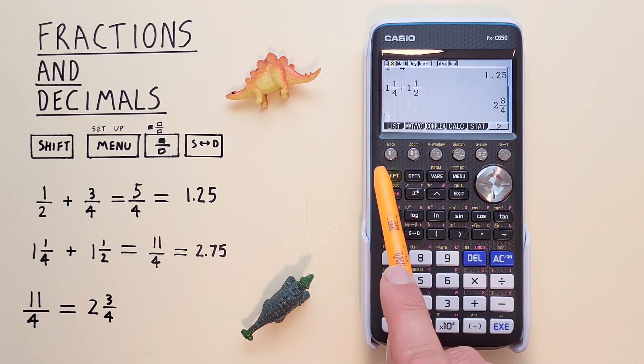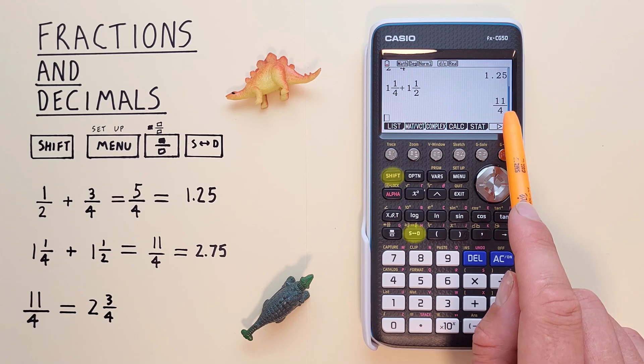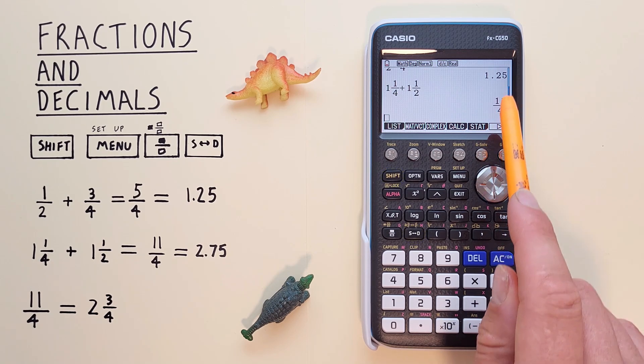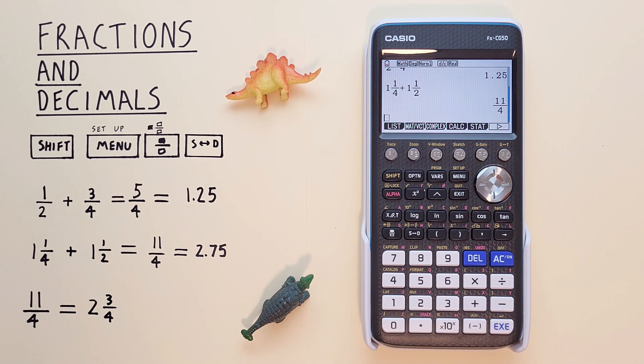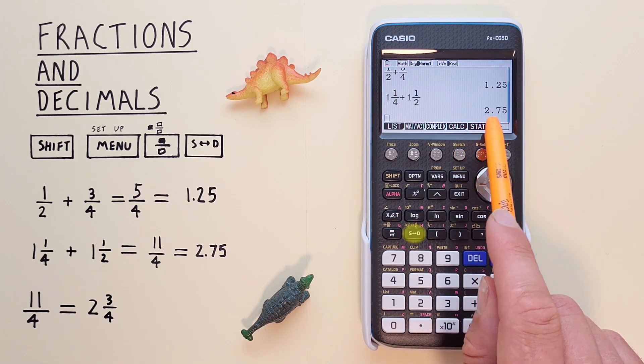And we see that converts to 2 and 3 quarters. And then if we press SHIFT STD again, it converts back to 11 over 4. And again, if we press it again, we can get that as a decimal.